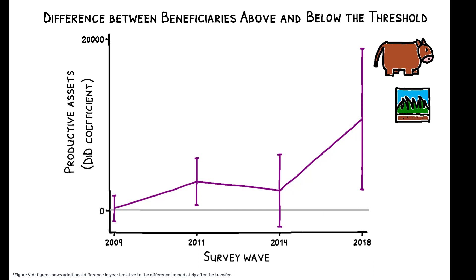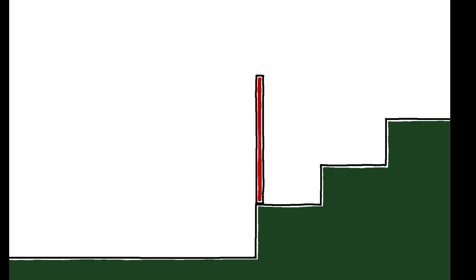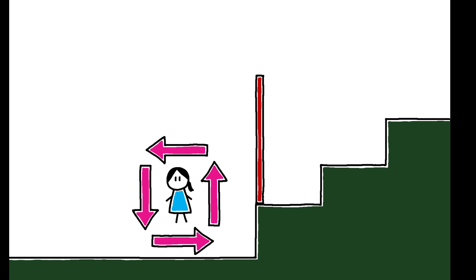These long-run dynamics underscore a key point. In the presence of poverty traps, one-time transfers can lead to permanent reductions in poverty.